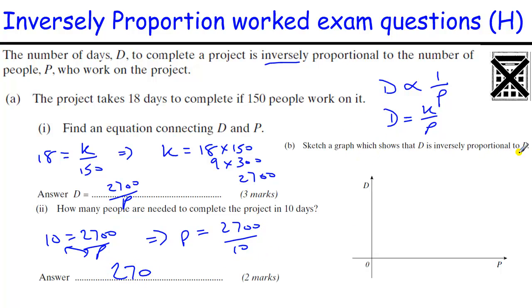This question asks for a graph which shows D is inversely proportional to P. Well, inverse proportional with no square or anything, that's just a reciprocal graph, which looks like this. So as P gets bigger, D gets smaller. As D gets bigger, P gets smaller.